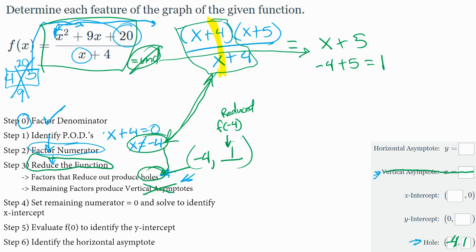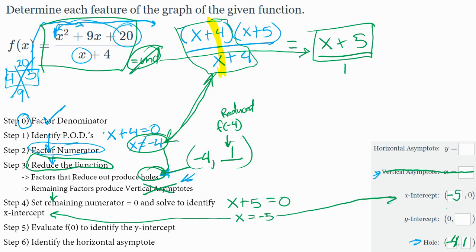And then we continue down the list. So our job is to set now the remaining numerator equal to 0 and solve. And a lot of students look at x plus 5 and say, well, there is no numerator. There's no fraction left. Well, everything is always over 1. So this is the numerator I'm talking about. So you set x plus 5 equal to 0, and then you solve that. x equals negative 5 is the result, and that is my x-intercept location. So I put that over here in the box. It's specifically the coordinate negative 5 comma 0.